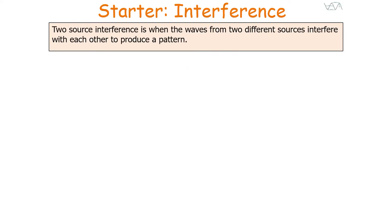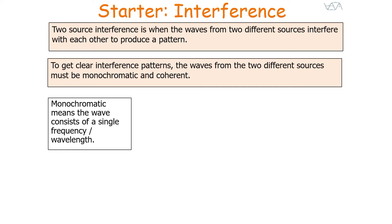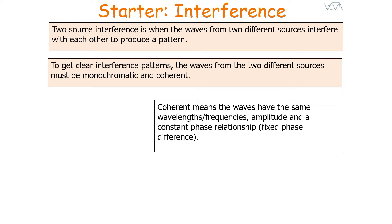Two-source interference is when waves from two different sources interfere with each other to produce a pattern. To get a clear interference pattern, the waves from the two different sources must be monochromatic and coherent. Monochromatic means the wave consists of a single frequency or wavelength, whilst coherent means the waves have the same wavelength or frequency, the same amplitudes, and have a constant phase relationship — a fixed phase difference.